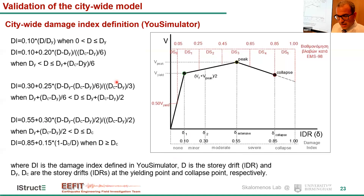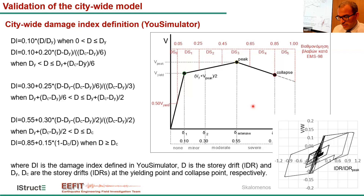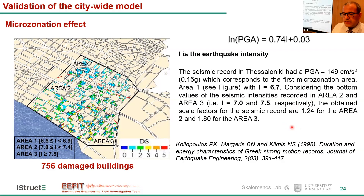The U-Simulator specifies the deformation at each building, calculates the energy, and provides a damage index. We can assign five distinct damage states: non-damage, minor, moderate, severe, and destroyed/collapse. One important thing to note is that we also consider the microzonation effect. In Thessaloniki, there are different soil conditions, and when simulating a whole city, soil-structure interaction must be considered. Extensive work was done to specify the seismic intensity at different parts of the city, resulting in three distinct zones: Area 1 (north), Area 2 (middle), and Area 3 (south), with higher intensity in Area 3.